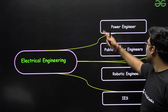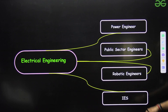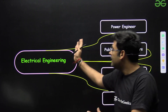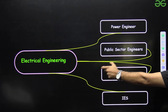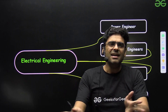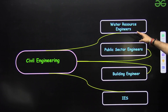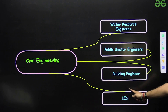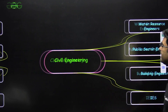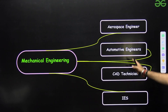For civil engineering: water resource engineers, public sector engineers, building engineers, and IES. For mechanical engineering: aerospace engineer — a highly in-demand branch — and automotive engineers. Nowadays, CAD technicians are also in demand; big companies like Boeing are heavily recruiting CAD technicians, and while the pay may not be the highest, demand has suddenly increased.